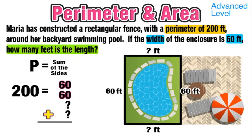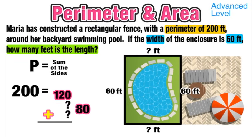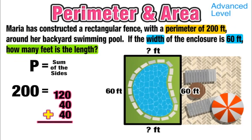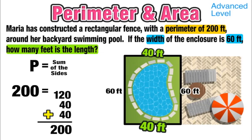Adding 60 and 60 together gives 120. What's left to reach 200 is 80, so the two unknown lengths together equal 80. Since that represents two sides of the rectangle, dividing 80 by 2 gives 40 — each length is 40 feet, since 120 plus 40 plus 40 equals 200. The length of the enclosure is 40 feet.